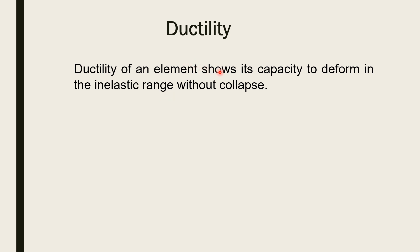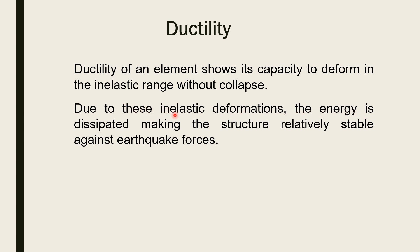Ductility of an element shows its capacity to deform in the inelastic range without collapse. In concrete members, reinforcement is present and there are two main portions: the elastic region and the inelastic region. After yielding, there is release of energy in the inelastic range. The structure has reserve capacity before final failure, and the inelastic range gives us time or warning before failure.